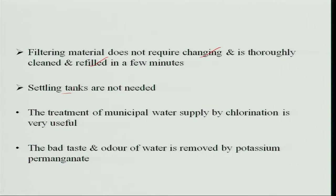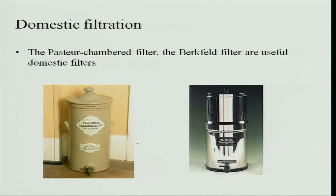All municipal water supply treatment is done by chlorination, which is very useful for clearing water. The bad taste and odor of water is removed by using potassium permanganate. Domestic filtration is done using different filters — the Pasteur chambered filter and the Berkefeld filter are very effective for filtering water and making it clear. Instead of drinking water directly from a river or other source, it is better to filter it; if nothing is available, boiling the water also removes impurities, and leaving it to settle gives you pure drinking water.